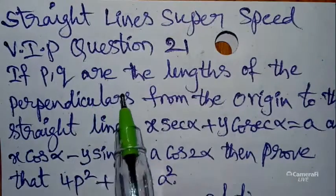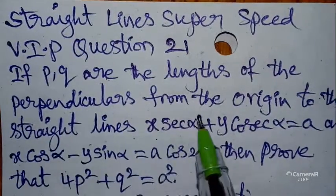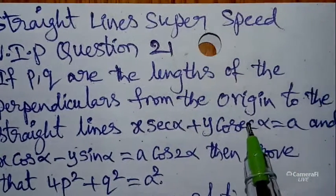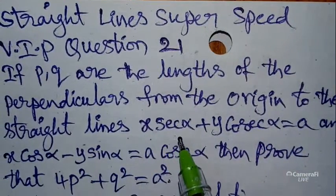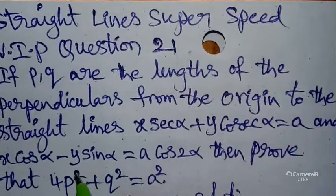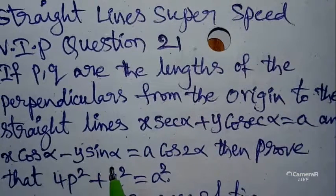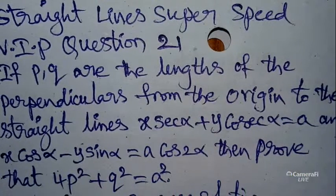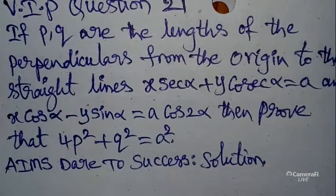The question is: if P and Q are the lengths of the perpendicular from the origin to the straight lines x·sec α + y·cosec α = a and x·cos α − y·sin α = a·cos 2α, then prove that 4P² + Q² = a².